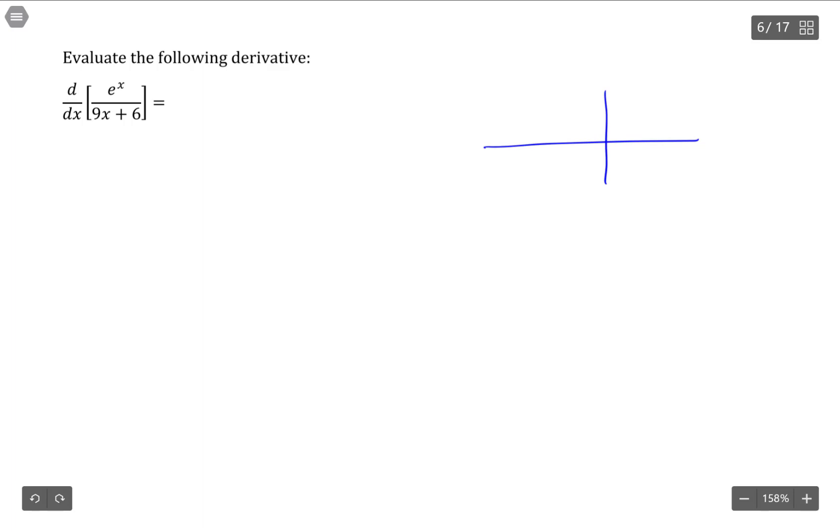So the numerator is e^x, the denominator is 9x plus 6. And if you notate your quotient rule in a different way, that's perfectly fine. This is just how I choose to do mine.